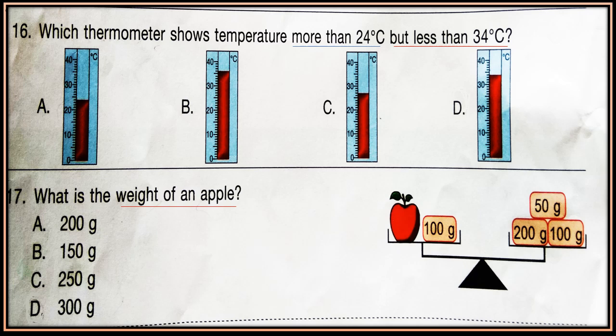Question 17. What is the weight of an apple? Now see the figure. Apple plus 100 gram equals 350 gram weight. Now calculate the weight of the apple.